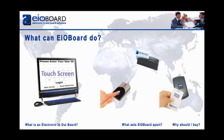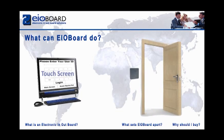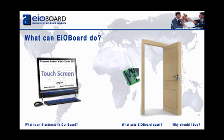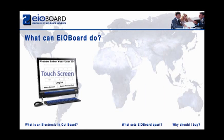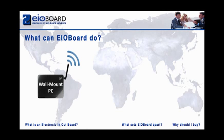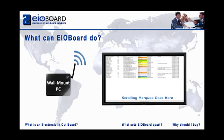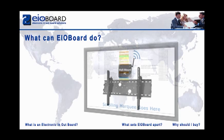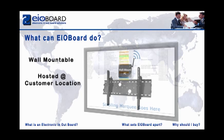EOBoard has the ability to be used with existing hardware with our EOBoard converter, so your current cards and card readers can be used with EOBoard. Another add-on feature we offer is our wall-mountable wireless PCs that can be hidden behind our large screen displays, giving users the ability to have EOBoard hosted at their location with the convenience of no wires having to be installed.